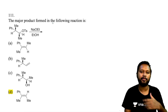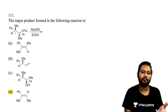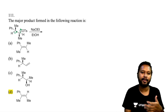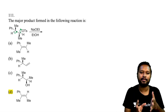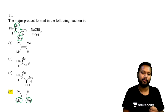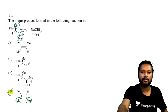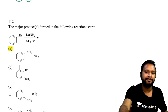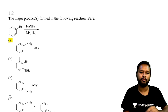Question 111: major product with an OTs leaving group and a bulky base (E2 elimination). The OTs and β-hydrogen must be anti-periplanar. Both methyl groups are anti to each other; the two methyls end up on the same side in the product, and Ph and H are on the other side. Correct answer is option D.